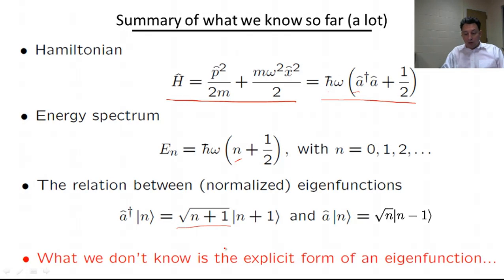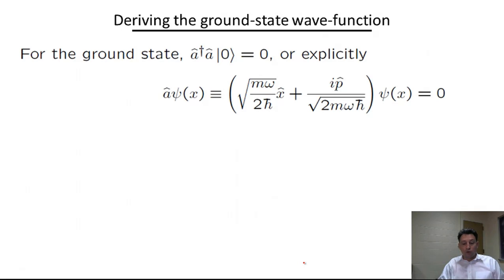In order to find the explicit form of an eigenfunction, let me focus on the ground state, the lowest energy state in our problem. This eigenstate is characterized by the fact that the action of a dagger a on it gives simply zero. It's an eigenstate with eigenvalue zero, or the eigenenergy of this state is h omega over two. In other words, the annihilation operator acting on this state must produce zero, and we can write this annihilation operator explicitly in real space using the definition of a.